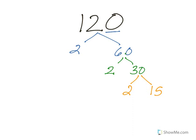Now, 15 is not even, so I can't use 2 again, but 15, I know, is 3 times 5. And once all of these numbers are prime, you know you can't break it down any further.